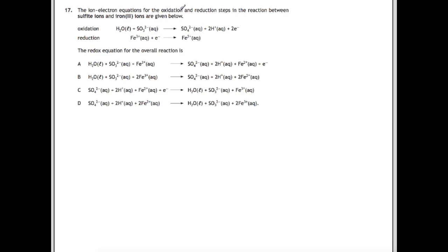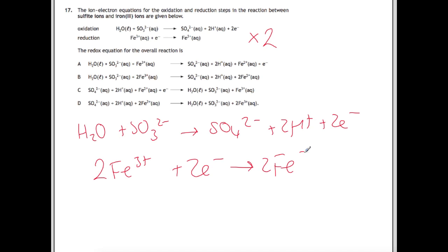The ion-electron equations for the oxidation and reduction steps in a reaction between sulfite ions and iron-3 ions are given below. The redox equation for the overall reaction is. Here we are trying to combine these two reactions. To combine them, we need to make sure that the electrons are equal. In the first reaction we have two electrons, but in the second we only have one. So that entire reaction has to be multiplied by two. That now gives us H2O plus SO3 2- to give you SO4 2- plus 2H+ plus two electrons. And now we'll have 2Fe3+ plus two electrons to give you 2Fe2+. You can cancel the electrons out, almost like they were spectator ions.